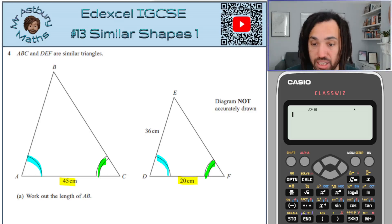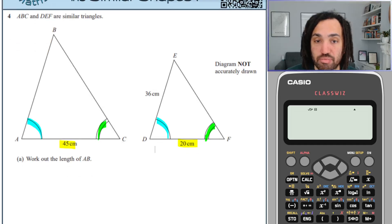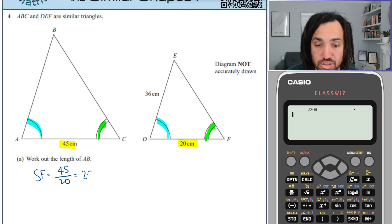So the yellow sides are in between the blue and the green angle, so they must be the corresponding sides. Now we can find the scale factor by taking the larger one and dividing it by the smaller one. This gives me 2.25.